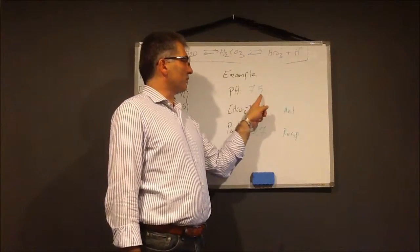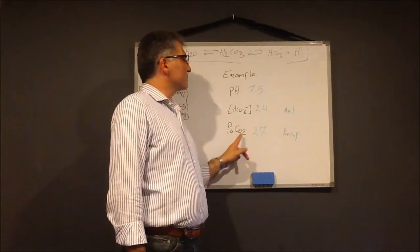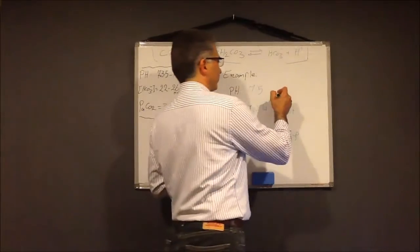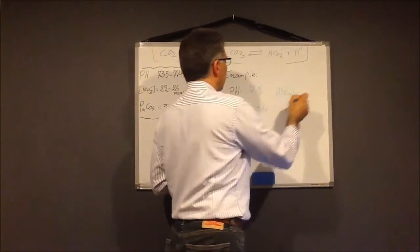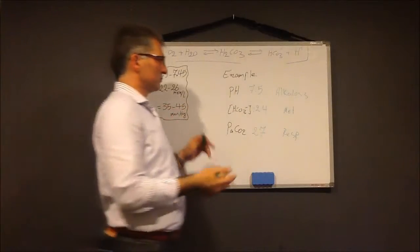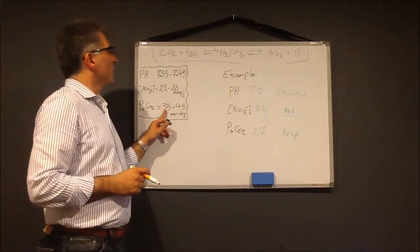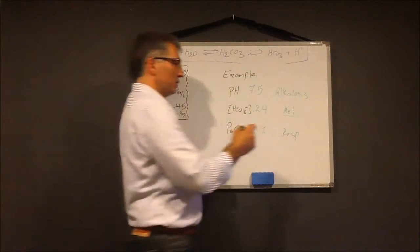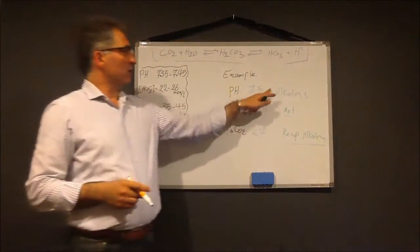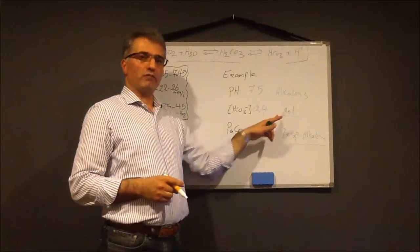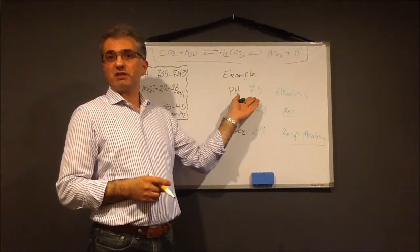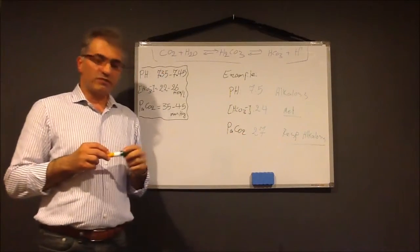Next case: pH 7.50 — alkalosis. Bicarbonate 24 — normal, no metabolic problem. pCO2 27 — below normal, respiratory alkalosis. The problem here is respiratory alkalosis — bicarbonate is normal, CO2 is low. Is it compensated? Not at all — pH is still high. The patient has respiratory alkalosis without compensation.